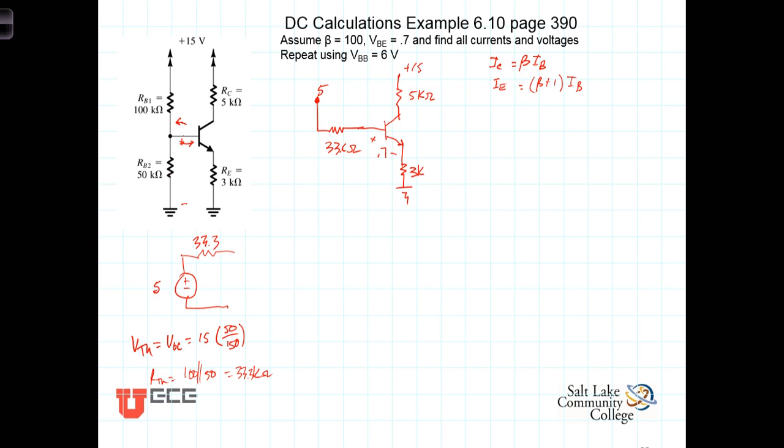So we'll do a KVL starting at 5 volts and dropping down. It will be 5 volts, and going in the direction of I sub B will be a voltage drop. So minus 33.3 kilo ohms—we'll keep I sub B in milliamps, we'll use kilo ohms there—drop down another 0.7 volts, so minus 0.7. And then we'll have minus 3k times I sub E, and that gets us down to our zero voltage reference.